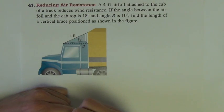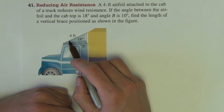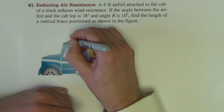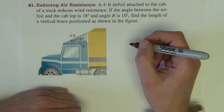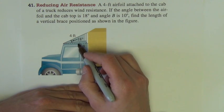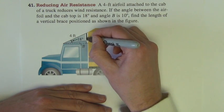Okay, this says a 4-foot airfoil attached to the cab of a truck reduces wind resistance. If the angle between the airfoil and the cab is 18 degrees, that's kind of hard to gather from this picture because the 18 degrees is right there. And the angle B is 10 degrees, find the length of the vertical brace there.